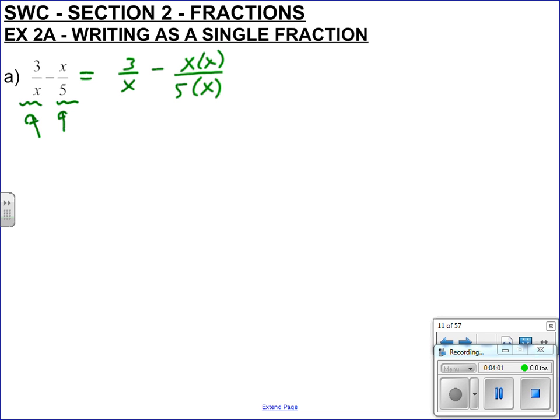This one has a five on the bottom, this one doesn't, so if I put a five on the bottom I have to put it on the top as well. That's 15 over 5x take away x² over 5x. Now I can put them together, so that's 15 take away x² over 5x, and we're all done there.